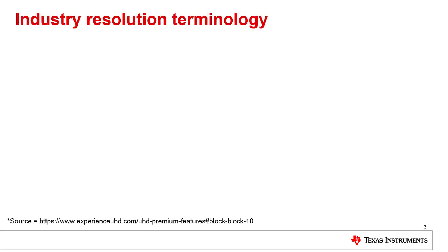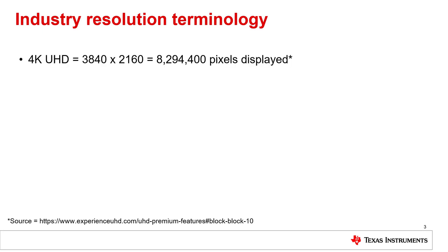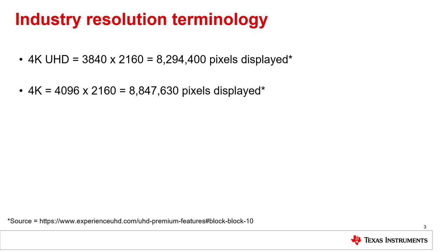Let's discuss some industry resolution terminology. 4K UHD is where 8.3 million addressable pixels are displayed — this is the dominant 4K standard in television and consumer media. 4K is where 8.8 million addressable pixels are displayed, a resolution primarily used in the digital cinema industry.